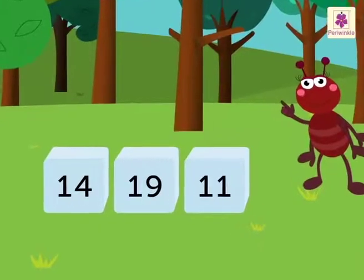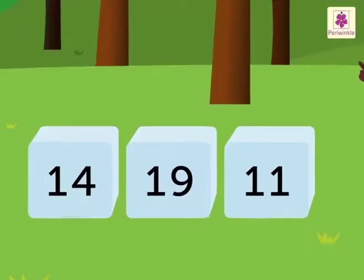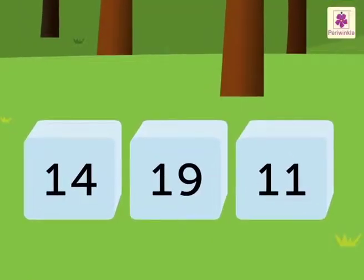Look, Taub got 3 new numbers to arrange in the ascending order. They are 14, 19, 11. Let's compare the ones as each number has 1 ten.